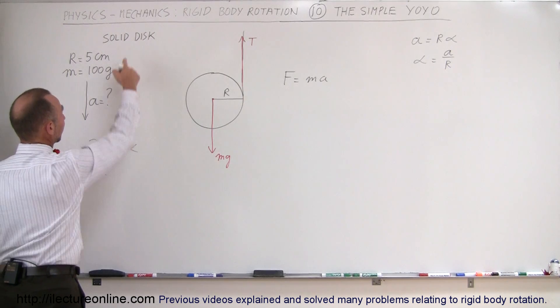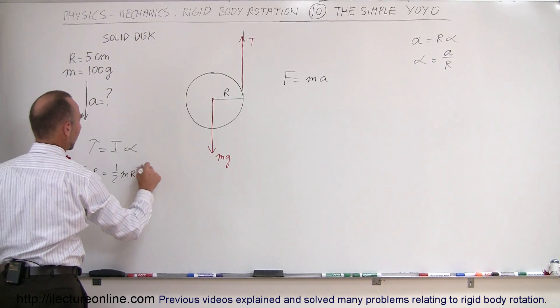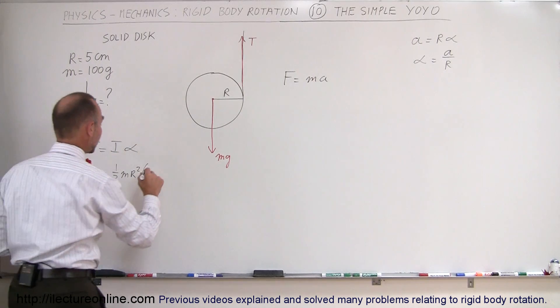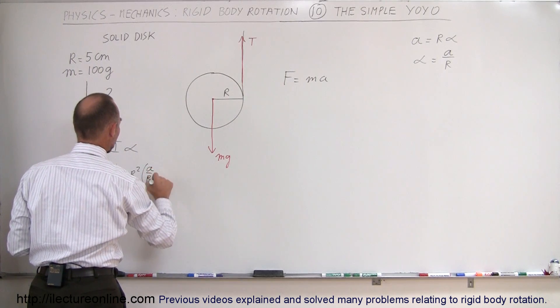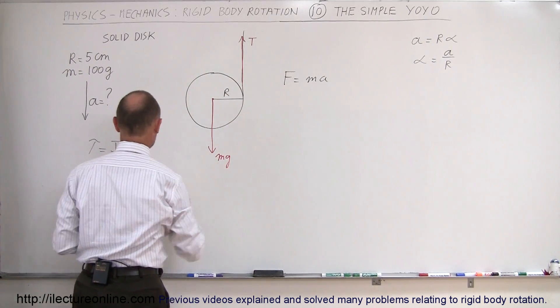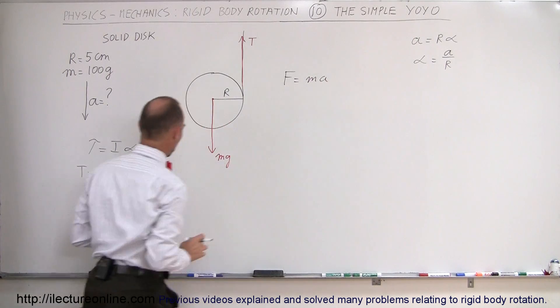The moment of inertia, since it's a solid disk, is one-half mR squared, and instead of the angular acceleration, we're going to relate that to the linear acceleration as A over R. The reason we want to do that is we eventually want to set the two equations equal to each other, and we want to make sure that this A here is the same as this A over there.